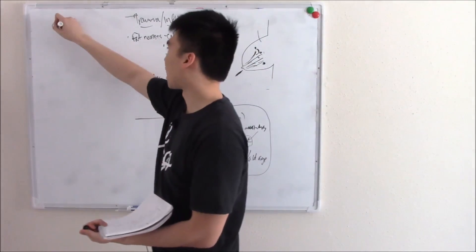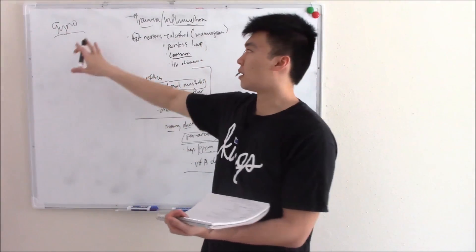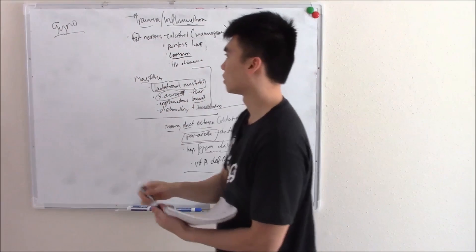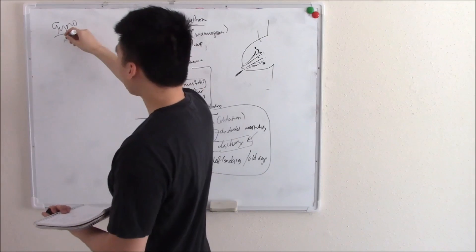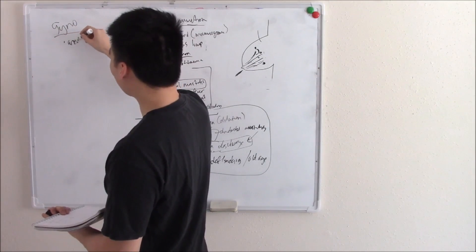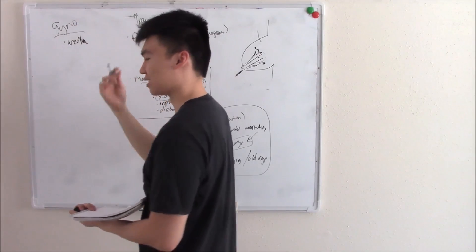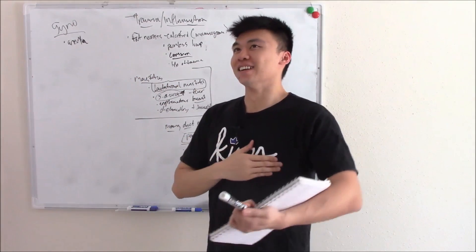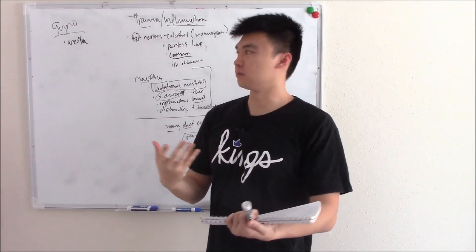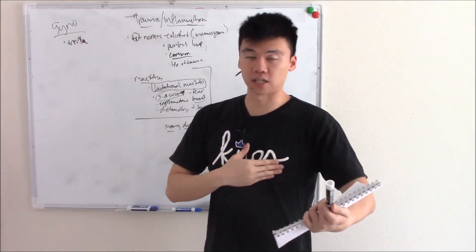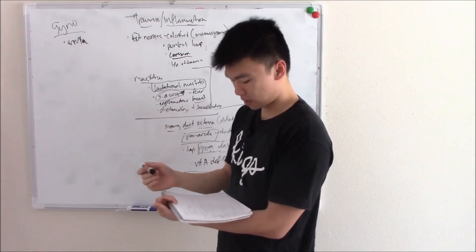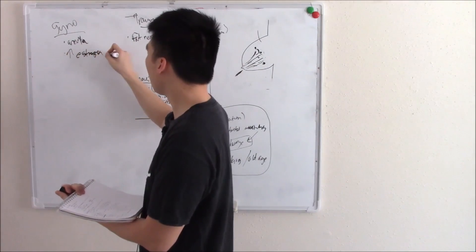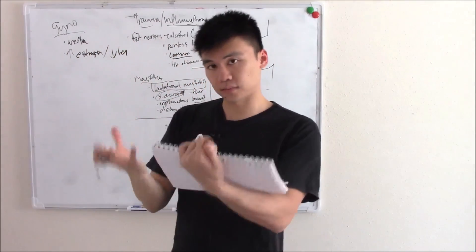One last thing I want to talk about is gynecomastia. Gyno is breast tissue, we talk about it in males. Do you remember where males have the most breast tissue? It's areolar. So it's most commonly found in areolar. If a patient comes in complaining of gyno, the first place you check is going to be the areolar. You're just playing odds at that point. You need to know it's from increased estrogen because that's what causes breast tissue, or decreased testosterone. And that balance is very important.